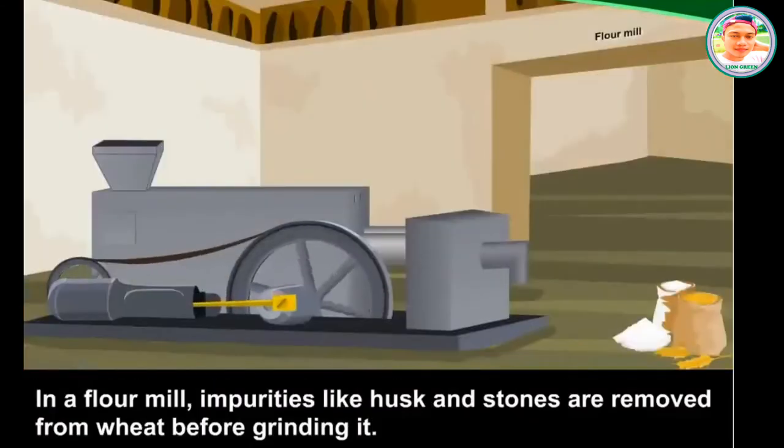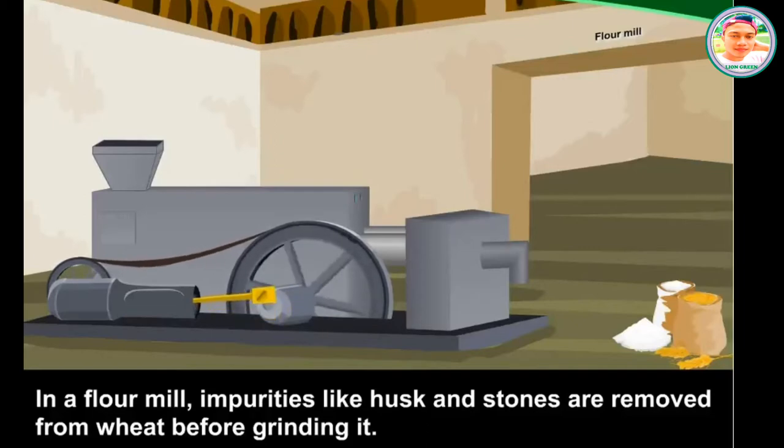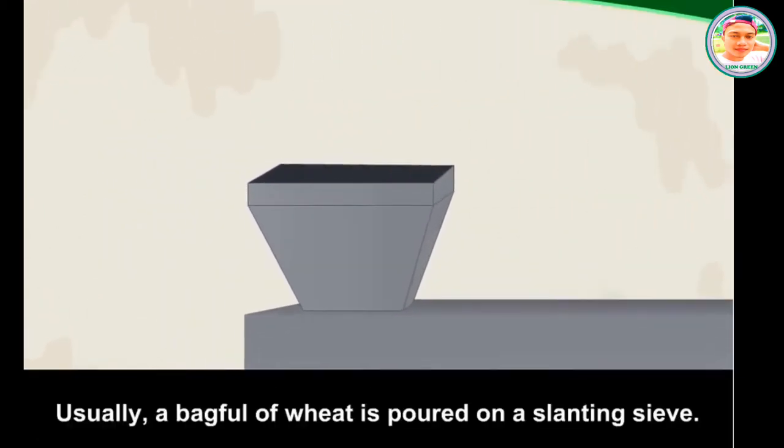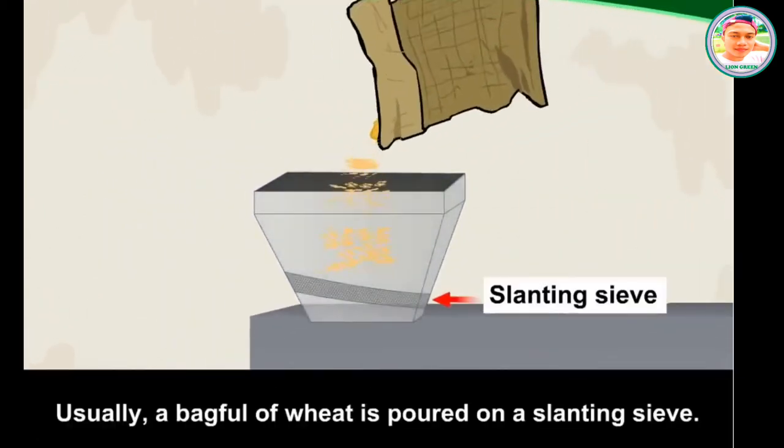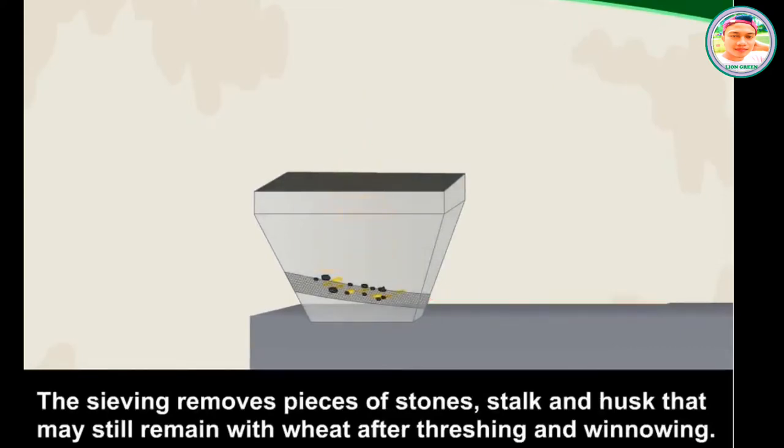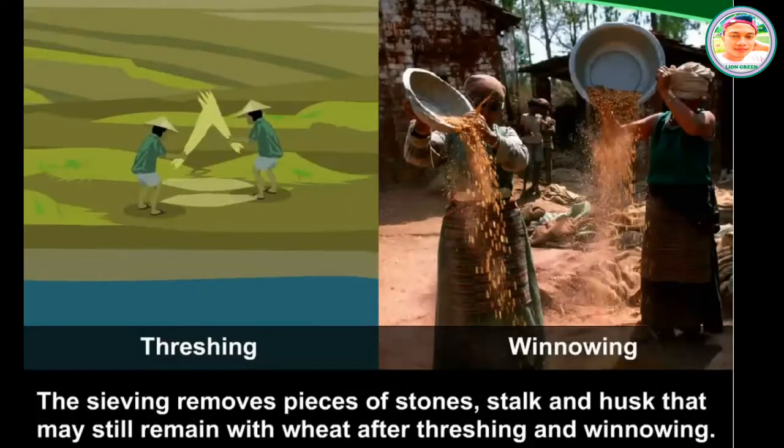In a flour mill, impurities like husk and stones are removed from wheat before grinding it. Usually, a bag full of wheat is poured on a slanting sieve. Sieving removes pieces of stones, stalk and husk that may still remain with wheat after threshing and winnowing.